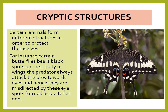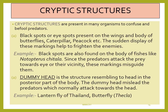Cryptic structures are structures to protect the individual and can be in the form of ocelli. For example, butterflies bear black spots on their body or wings, and the predator attacks the prey towards the eye. Hence, they are misdirected by these eye spots formed on the posterior end. Cryptic structures are present in a very large number of individuals to confuse or fool the predator. The black spot or eye spot is present on the wings of butterflies, on the body parts of caterpillars, and on peacock feathers. Sudden display of these markings helps to frighten the animal. Black spots are also found on the body of fishes like Notopterus chitala, and since the predator attacks the prey towards the eye or its vicinity, these markings misguide them.